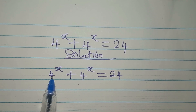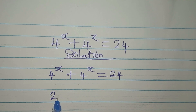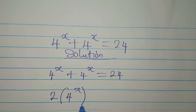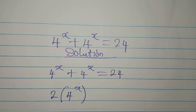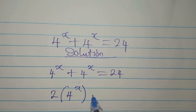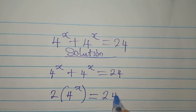4 to the power of x plus 4 to the power of x is equal to 2 times 4 to the power of x, and this is equal to 24.